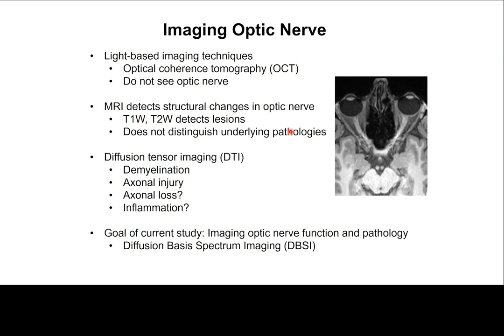Conventional T1 and T2 MRI can detect tissue changes, but unfortunately cannot tell you the difference in underlying pathology. Diffusion tensor imaging (DTI) was developed to allow assessment of demyelination and axonal injury. Unfortunately, these measurements are also confounded by the presence of axonal loss or inflammation. So the goal of the current study is to develop diffusion-based spectrum imaging (DPSI) to image optic nerve function and pathology.